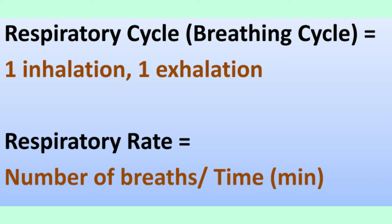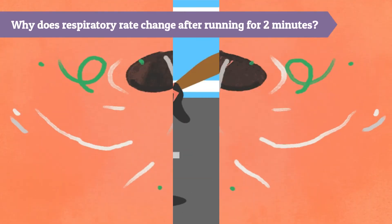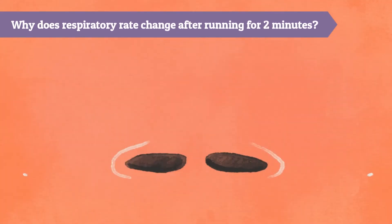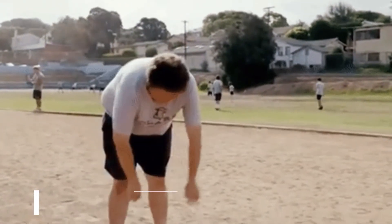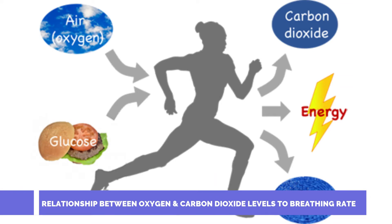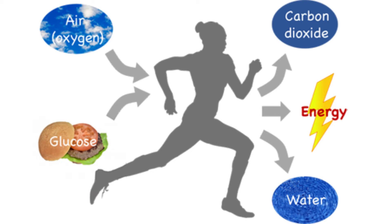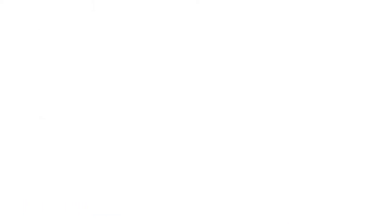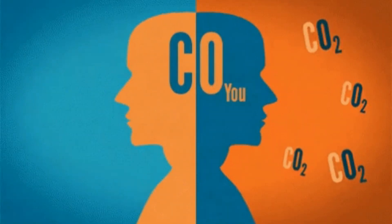Our respiratory rate can be measured by the number of breaths we take per minute. After exercising, we can notice that our respiratory rate increases, while when we relax, our respiratory rate is low. This is because during exercise, we need more energy, thus more carbon dioxide is produced as a waste product from cellular respiration. At this moment, chemoreceptors signal the brain to increase respiratory rate so as to exhale the excess carbon dioxide and inhale oxygen.